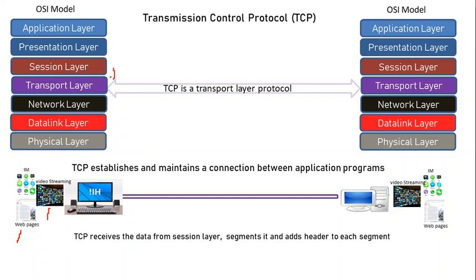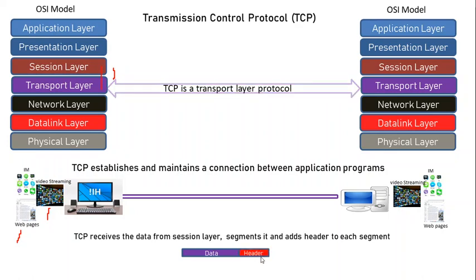In addition, TCP receives data from the session layer at the transport layer. TCP then segments that data into parts and adds a header on top of each segment. So this is the data, and TCP will add a header on top of that — we call it a segment.